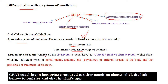Ayurveda is the science of life and is considered an Upa Veda — meaning it is a sub-part of Atharva Veda. We have four Vedas, and Ayurveda is considered a sub-part of Atharva Veda. This Atharva Veda deals with herbs, plants, and the physiology of different organs of the body. So in Ayurveda system, we also learn about plants, herbs, and their uses.